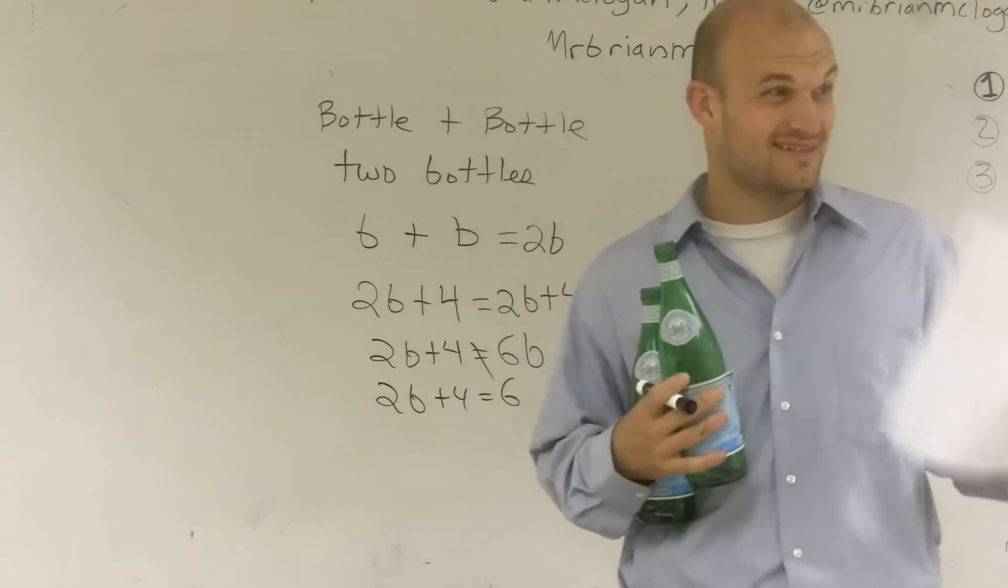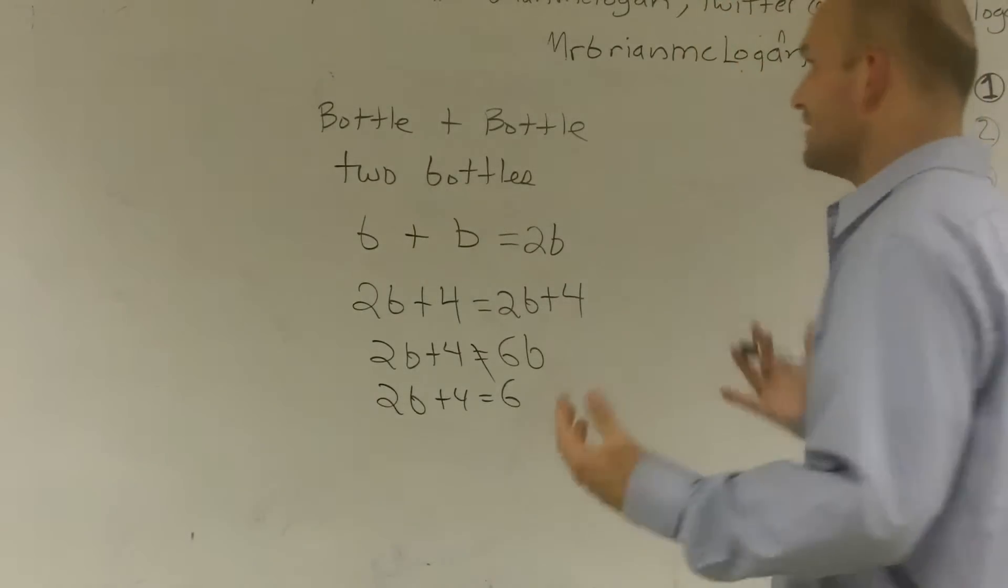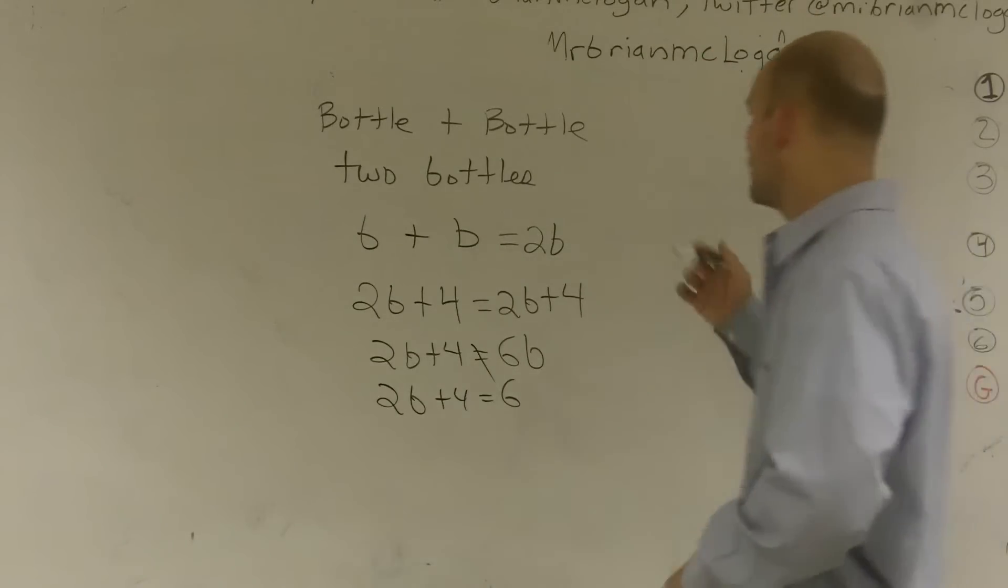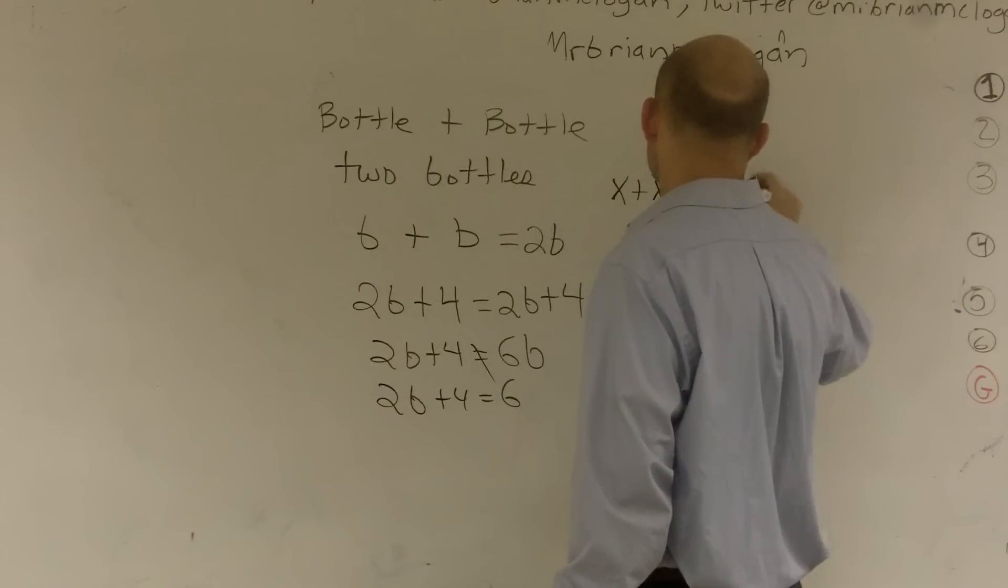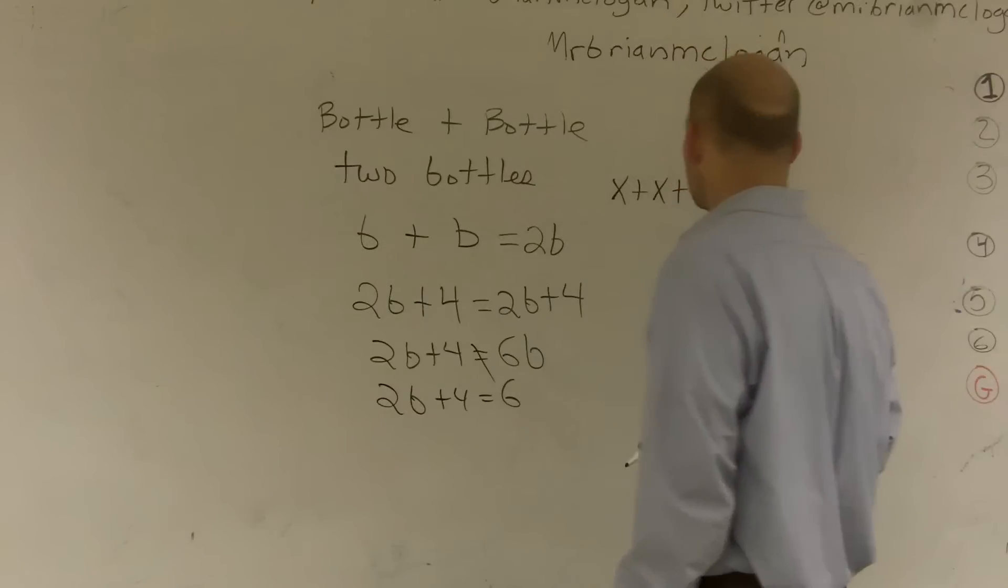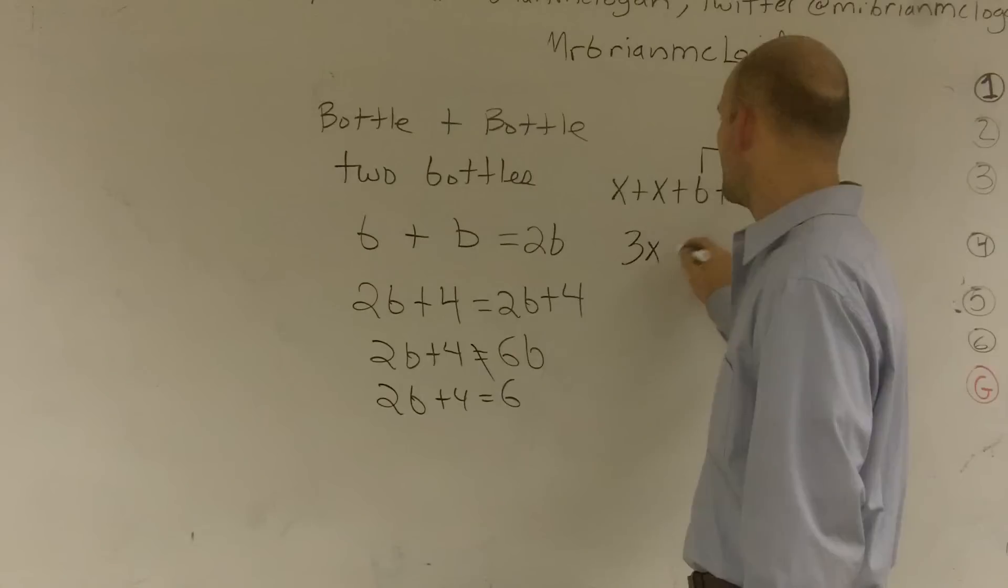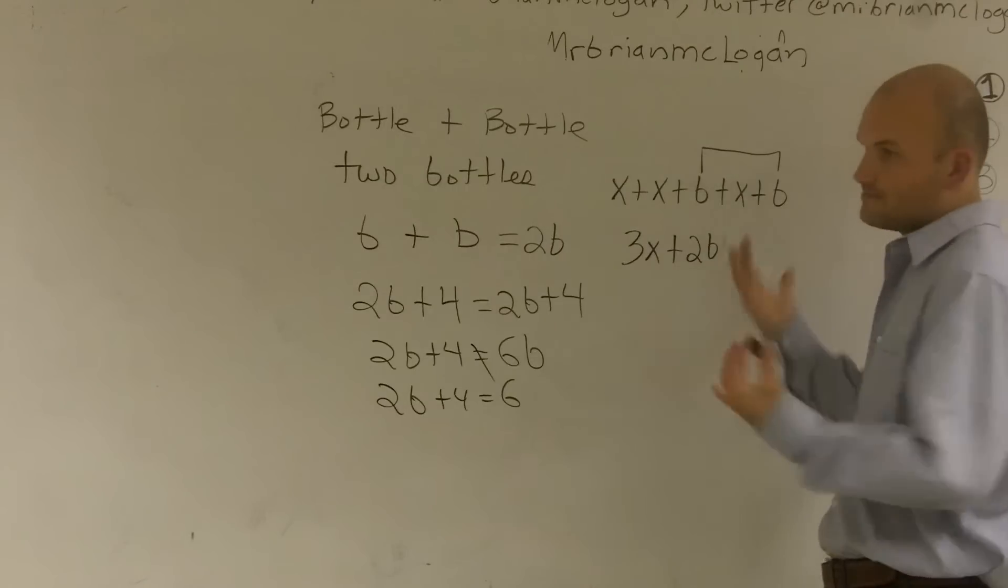Does that kind of make some sense? Hopefully. So this comes up a lot in algebra. A lot. And you've really got to understand, if you have like x plus x plus b plus x plus b, you can only add a bottle and a bottle to give you two bottles, and your x's to give you 3x plus 2b. You can only combine those.